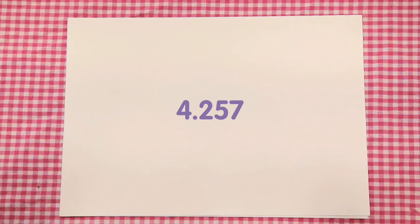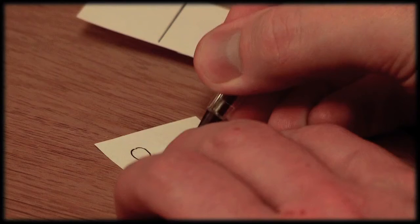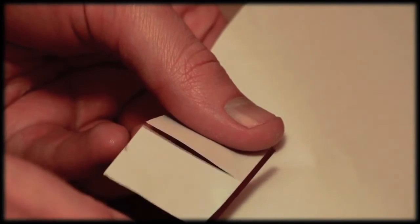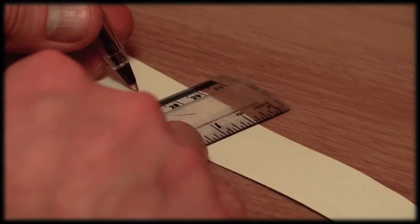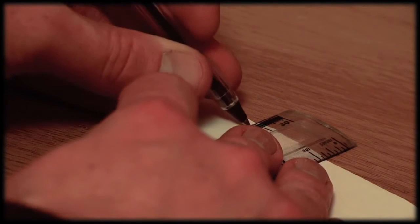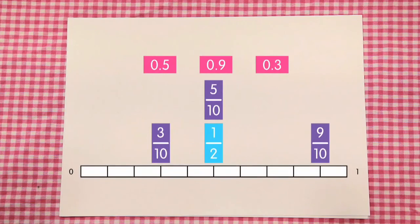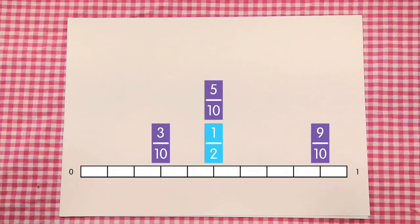Using paper or card, cut out some cards containing the fractions and decimals. Use a ruler to create a strip with ten equal parts. This will be the number line. Place the fractions on the number line and encourage your child to place the decimal cards on the correct corresponding fraction.